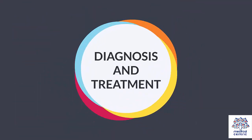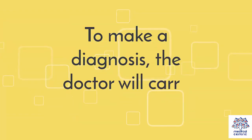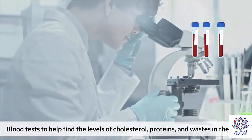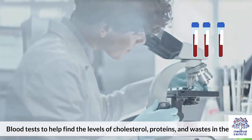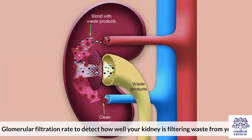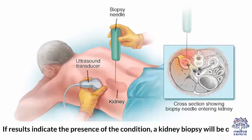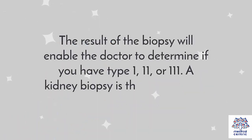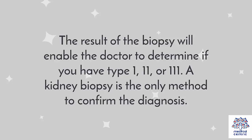Diagnosis and treatment: To make a diagnosis, the doctor will carry out urine tests to help find protein and blood in the urine, blood tests to help find the levels of cholesterol, proteins, and wastes in the blood, and glomerular filtration rate testing to detect how well your kidney is filtering waste from your body. If results indicate the presence of the condition, a kidney biopsy will be ordered. The result of the biopsy will enable the doctor to determine if you have type 1, 2, or 3. A kidney biopsy is the only method to confirm the diagnosis.